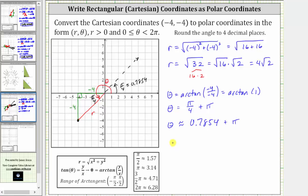So the exact angle theta would be pi over four plus pi, or 5 fourths pi radians,